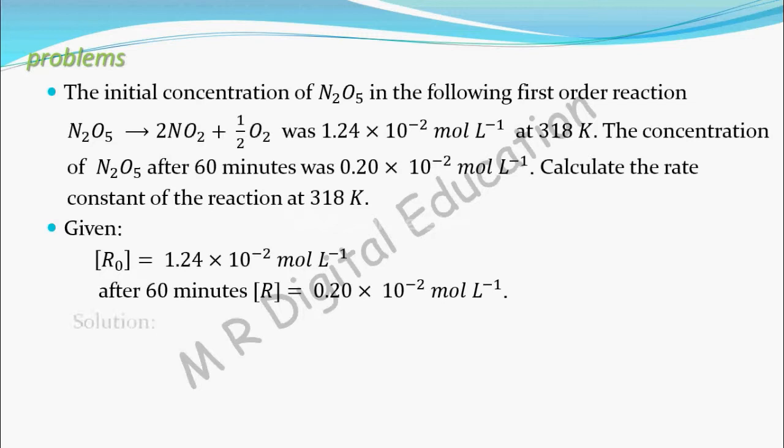Now he is asking for rate constant. You know for first order reaction, rate constant can be given as K equals 2.303 by time times log of R0 by R.